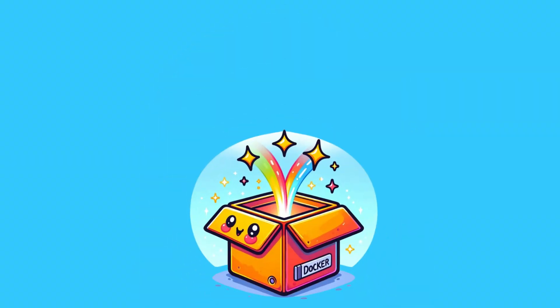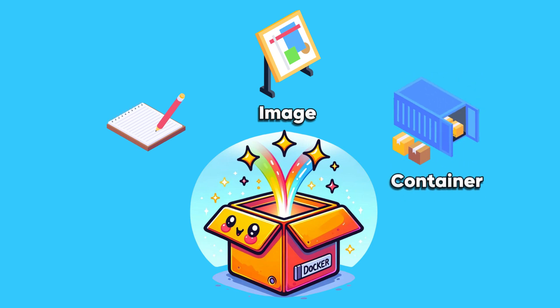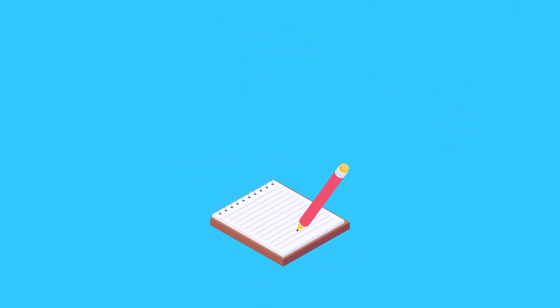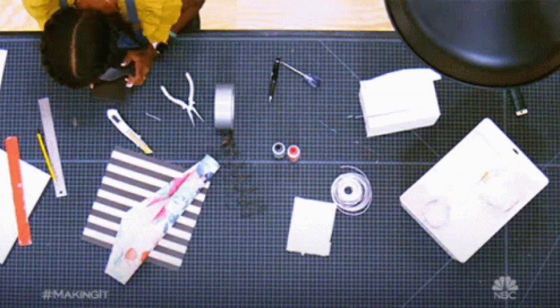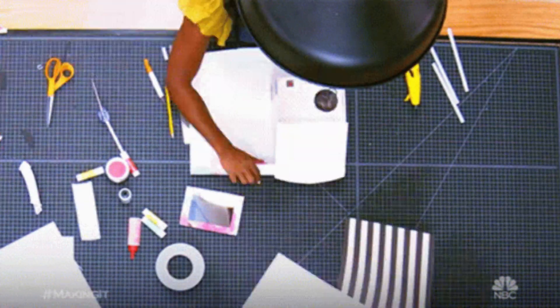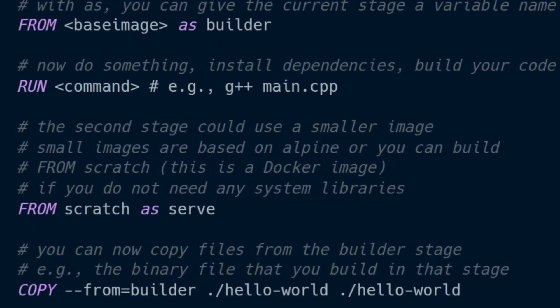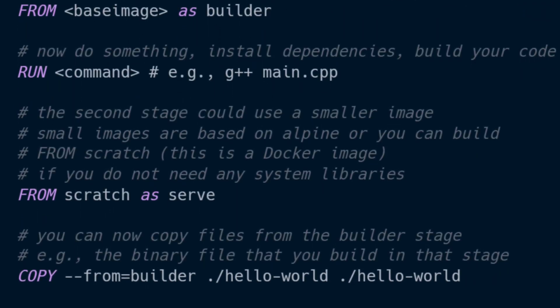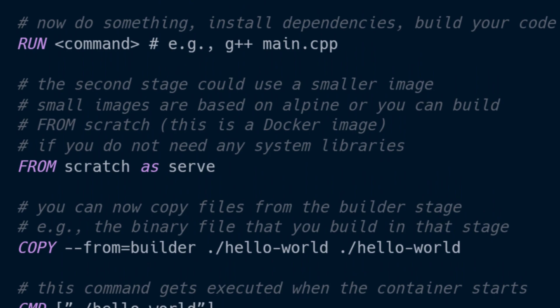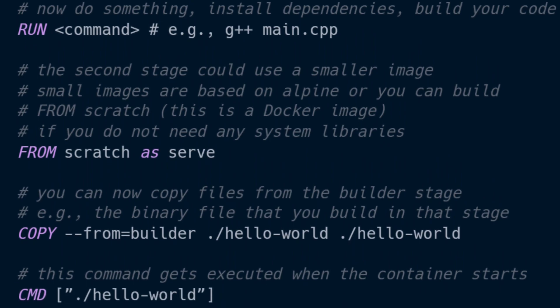Alright, the three core ingredients: a Dockerfile, a Docker image, and a Docker container. Let's look at the Dockerfile first. Imagine it as a crafting manual for your magic box, so everything and everyone knows how this thing should be built. It is a simple text file serving as a step-by-step instruction script on how to build and run your application.